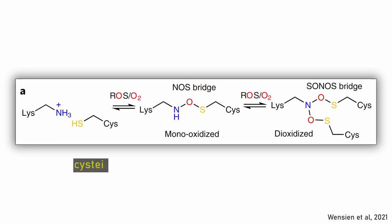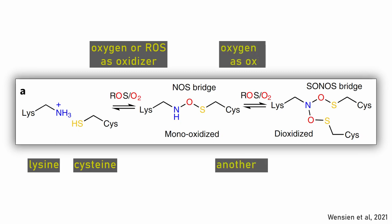To form a NOS bridge, a cysteine residue reacts with a lysine residue, with a reactive oxygen species or molecular oxygen as oxidizer. When a second cysteine residue joins in, again oxidized by a ROS or oxygen, a SONOS bridge is formed.